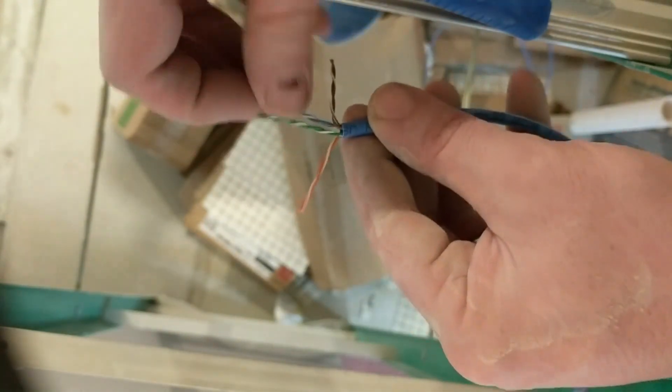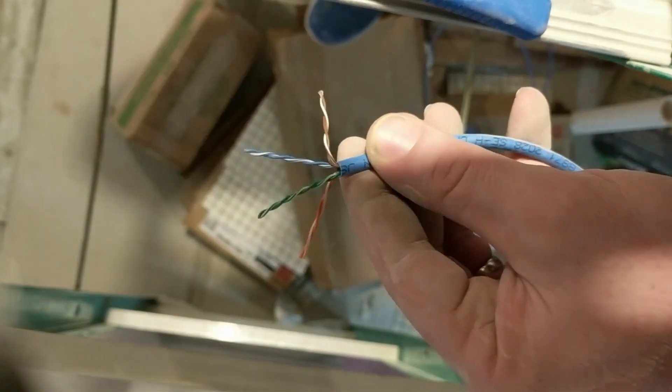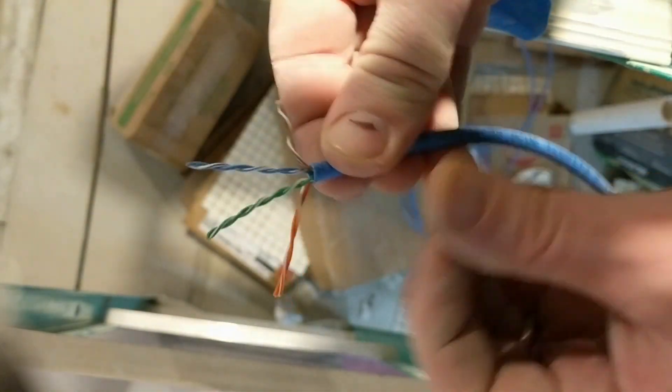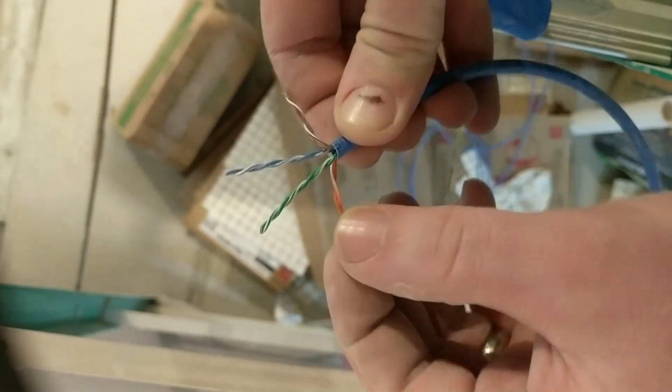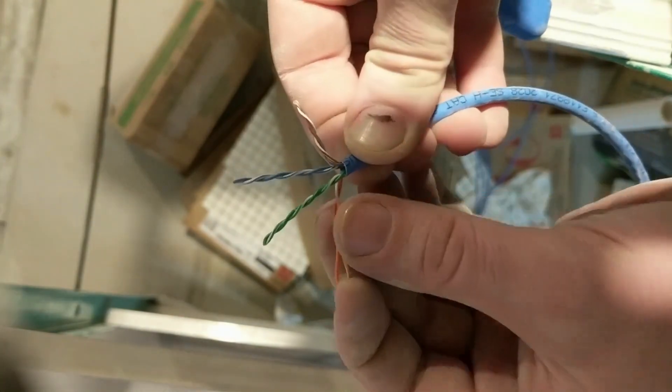The next thing I always do is I separate out the colors. So I do the oranges, then the greens, then the blues, then the browns from left to right. This is for the 568B configuration style.